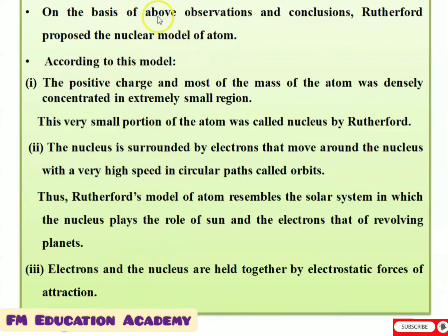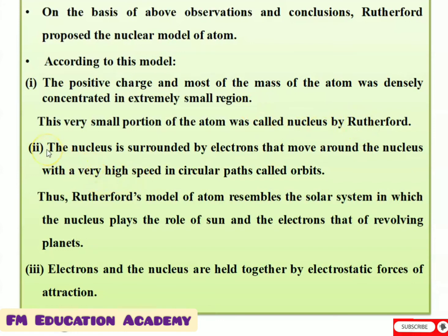According to the nuclear model of atom, there are three points. First, the positive charge and most of the mass of the atom are densely concentrated in an extremely small region, which Rutherford named the nucleus. Second, the nucleus is surrounded by electrons that move around it at very high speed in circular paths called orbits — electrons are revolving around the nucleus. Thus, Rutherford's model of the atom resembles the solar system, in which the nucleus plays the role of the sun and the electrons that of revolving planets.